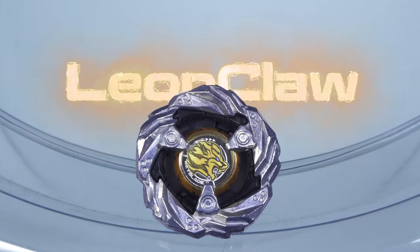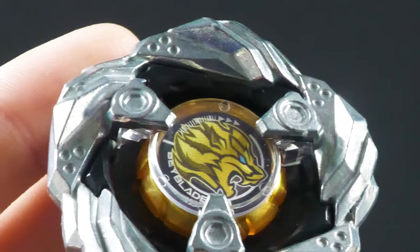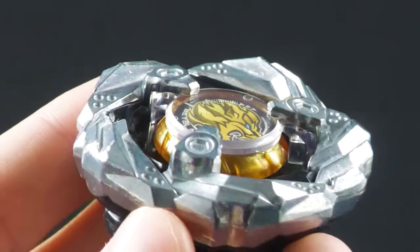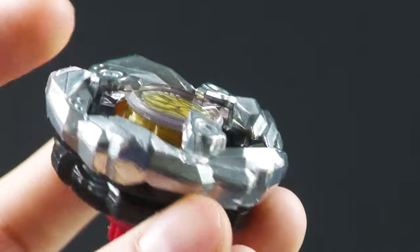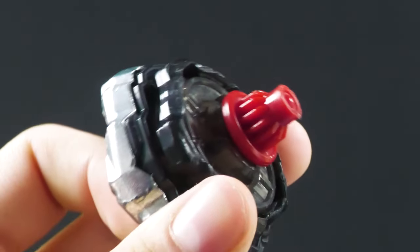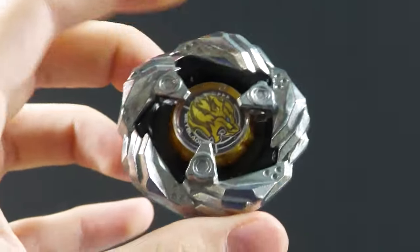Hello everyone, and for this video we have Leon Claw, a fierce Beyblade with attributes of defense and attack. When it stands still it should have defensive properties, but once it tilts it uses its claws to claw the shit out of its opponent.